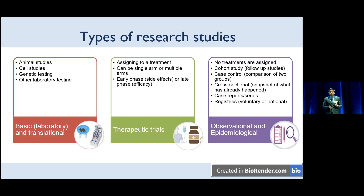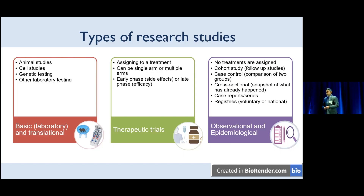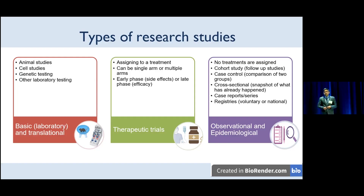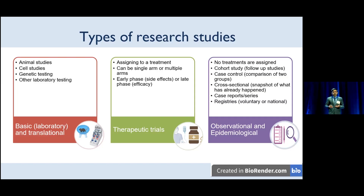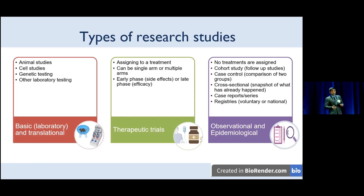The second type is a clinical trial, where individuals are assigned to a particular treatment. That can be done to figure out how safe a drug is — that's an early phase trial — or how effective a drug is, which is a later phase trial. That can be a single arm trial without any control arm, or it can be a multiple arm study. The third type, which is actually the most common in ECD, is observational or epidemiological studies. In these, you don't assign a treatment — you may observe patients who are already on treatment. There are also registries such as the ECD registry where you can sign up voluntarily.